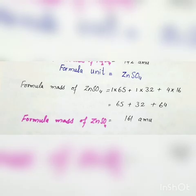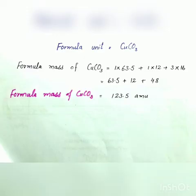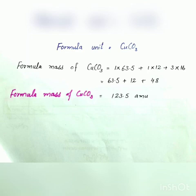Next is copper carbonate, with formula unit CuCO3. Copper has atomic mass 63.5, carbon has atomic mass 12, and oxygen has atomic mass 16. Putting all these values into the equation and solving gives us 123.5 atomic mass units. So the formula mass of copper carbonate is 123.5 atomic mass units.